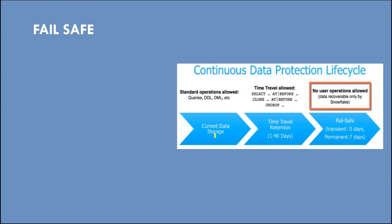Once the data has completed its time travel retention period, the data will be moved into the failsafe zone. In the failsafe zone, for transient tables, the failsafe zone is not applicable — meaning it exists for zero days. But for permanent tables, by default, it is seven days and this cannot be altered.